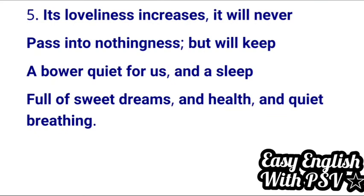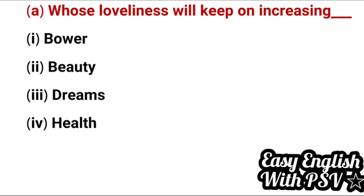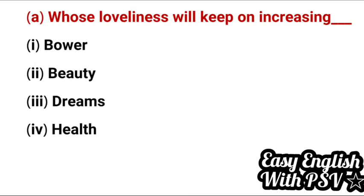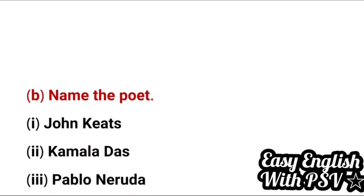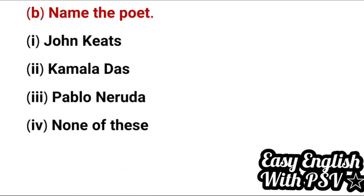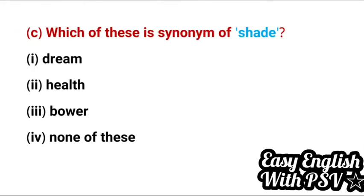Fifth extract revisits: 'Its loveliness increases, it will never pass into nothingness, but will keep a bower quiet for us, and a sleep full of sweet dreams and health and quiet breathing.' Question: Whose loveliness will keep on increasing? This entire poem is based on beauty — Endymion is searching for Cynthia, who is a thing of beauty for him. Also: name the poet — it's very easy: John Keats.